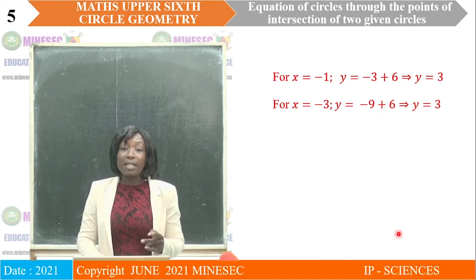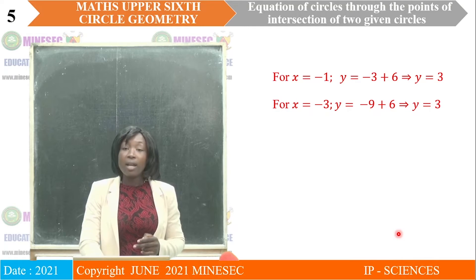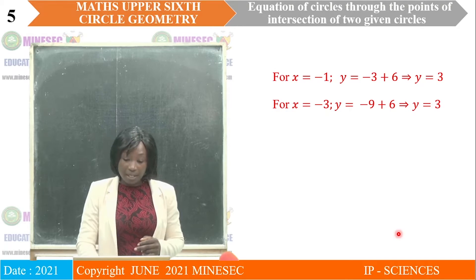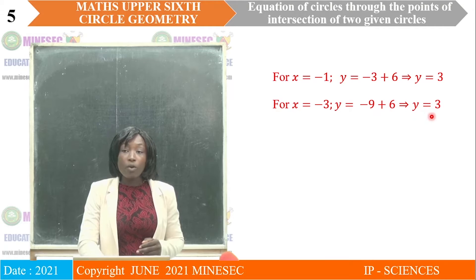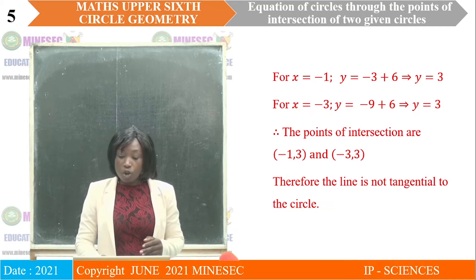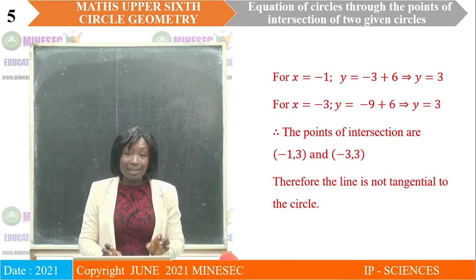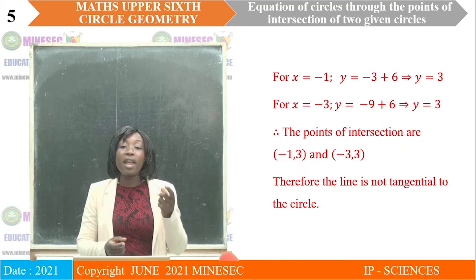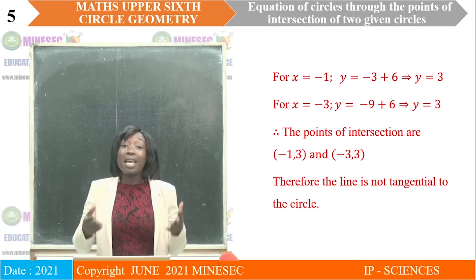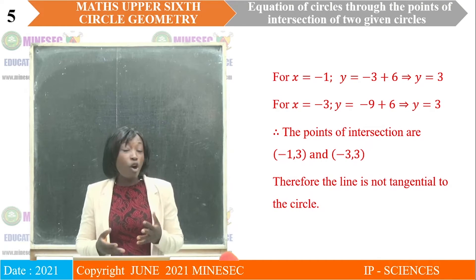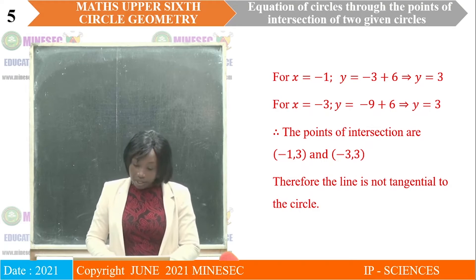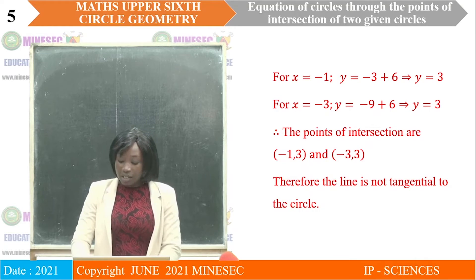If x = −1, substituting into the line equation gives y = −3 + 6 = 3. And if x = −3, y = −9 + 6 = −3. So we have two points of intersection of the line and the circle — meaning the line intersects the circle at two different points. Is the line tangential to the circle? Of course not, because for the line to be tangential, it must touch the circle at exactly one point. Therefore, the line is not a tangent to the circle.